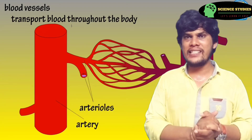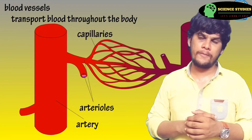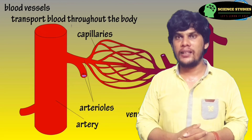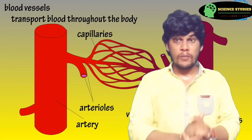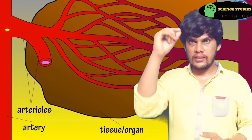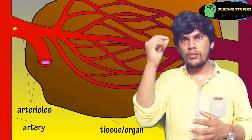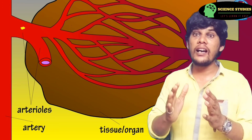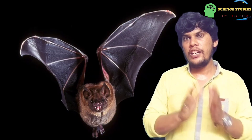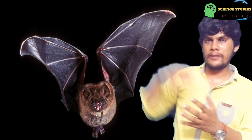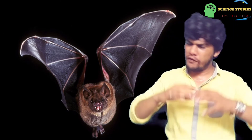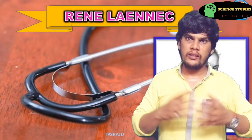The word 'capillary' is a Latin word that means hair-like structures. The scientist Marcello Malpighi observed these thread-like, hair-like, very minute capillary structures in the animal bat. He observed the wings of the bat, which were very thin and transparent. By observing these wings under the microscope, he found very microscopic hair-like structures — these are called capillaries.